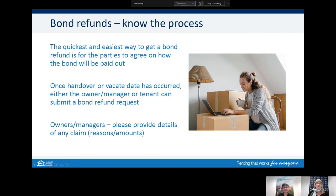At the end of the tenancy, notice must be given to end the tenancy — this can be done by either the tenant or the managing party. We recommend all tenants and property managers or owners talk about how the refund is going to be done before submitting a claim. An agreed refund is the quickest way for the bond to be paid out. If there are multiple tenants listed on the bond, all of them need to agree.